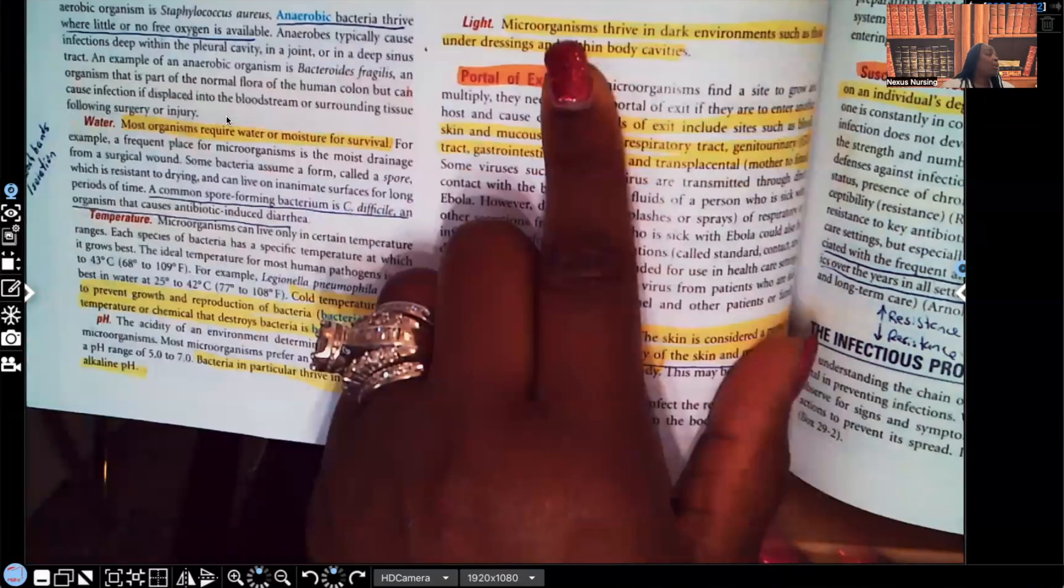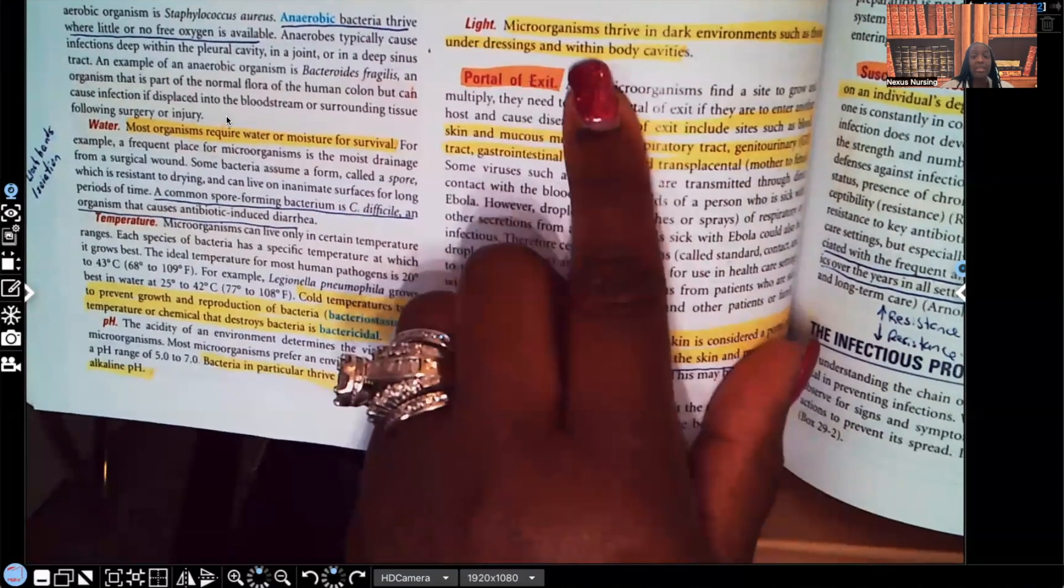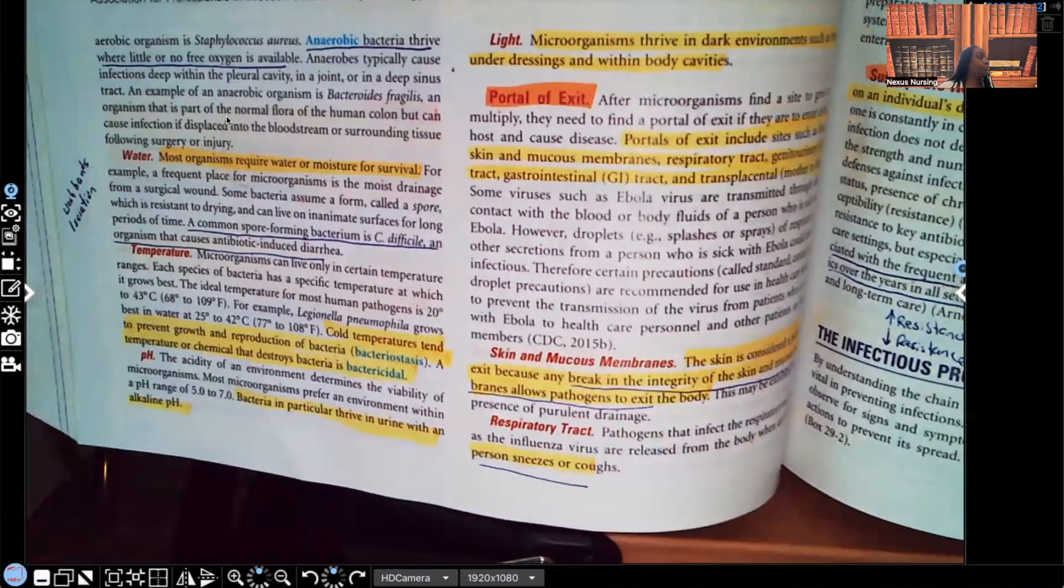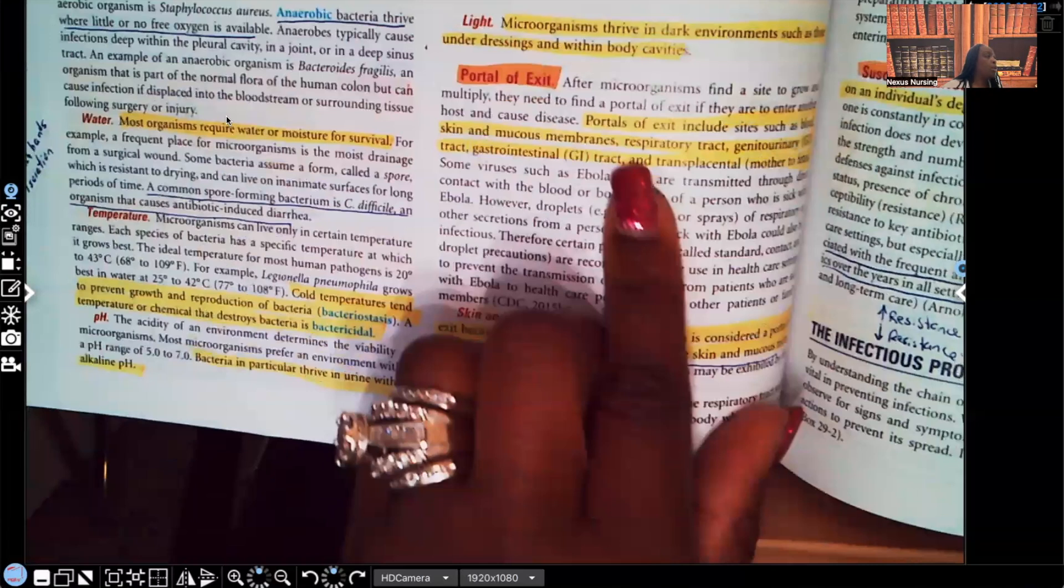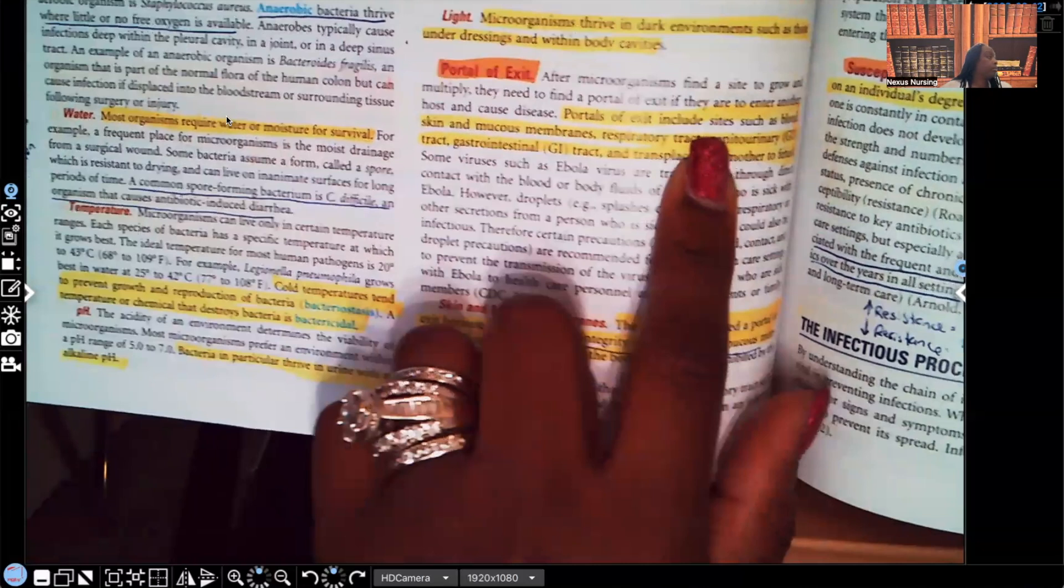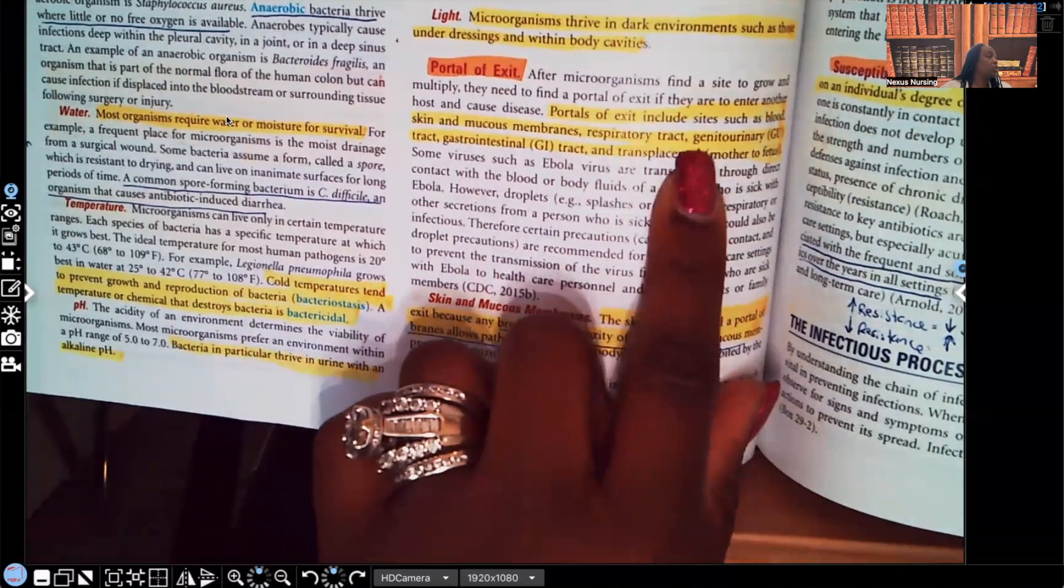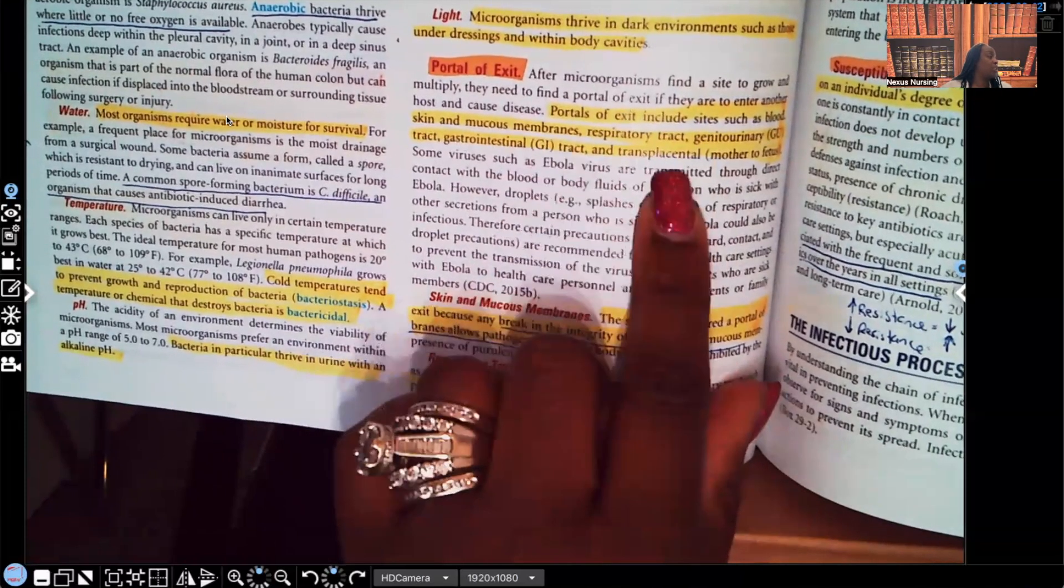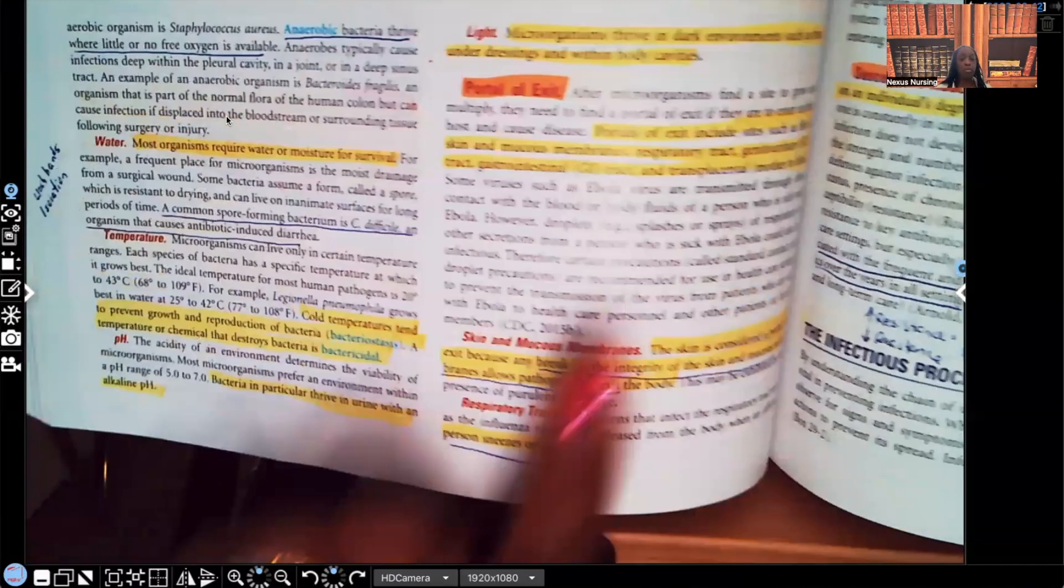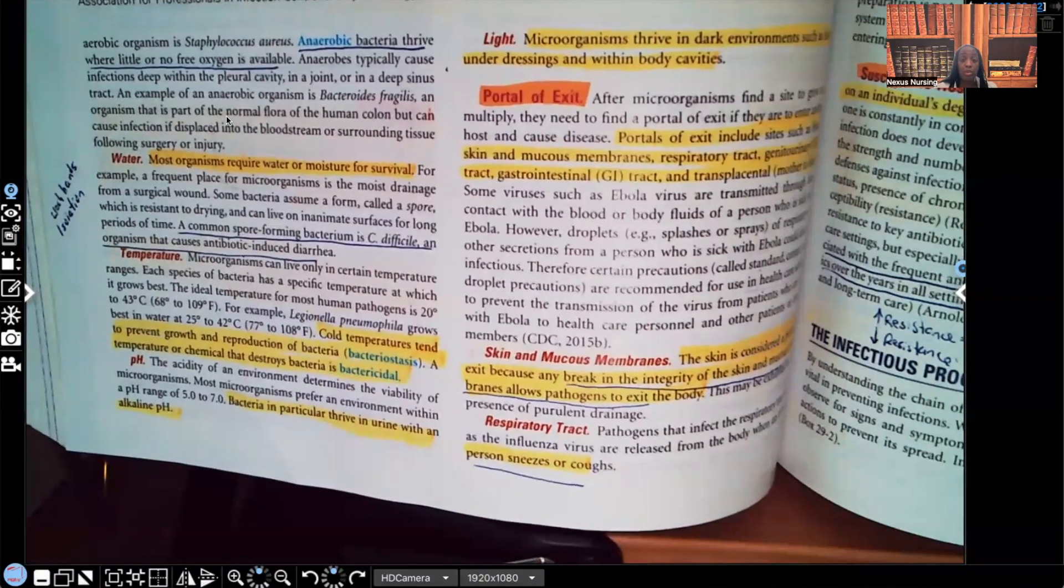Let's look at light. Microorganisms thrive in dark environments, such as those under dressings and within body cavities. Let's move on to portal of exit. Portals of exit include sites such as blood, skin and mucous membranes, respiratory tract, genitourinary tract, gastrointestinal tract, and transplacental. That's the mother to fetal, mother to fetus. Those are all the portal of exits for the pathogens. So let's go into detail with all of these portal of exits.